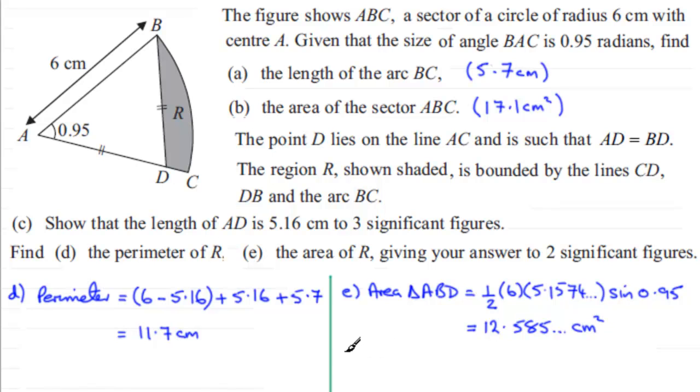So that means that we're in a good position now to get the area of R. So the area of R is going to be equal to the area of the sector ABC which was 17.1 centimeters squared and we subtract the area that we've just found 12.585 and so on. And if you do that you'll find that you get 4.514 and so on. But we've got to give this to two significant figures so to two significant figures it's going to equal 4.5 centimeters squared. Let me just say two significant figures, 2SF then for short. Alright.